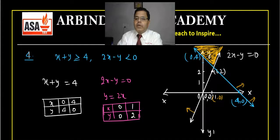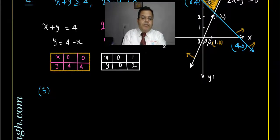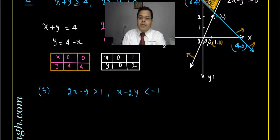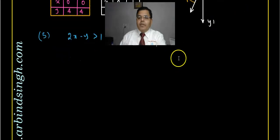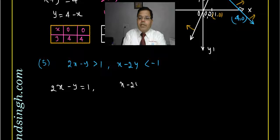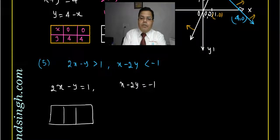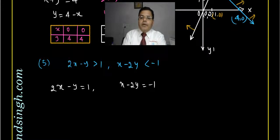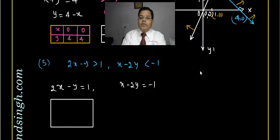Now question number 5. The equations are: 2x − y > 1 and x − 2y < −1. The corresponding equations are 2x − y = 1 and x − 2y = −1. Tables can be made for each. For 2x − y = 1: if y = 0 then x = 1/2, and if x = 0 then y = −1. For x − 2y = −1: if x = 0 then y = 1/2, and if y = 0 then x = −1.